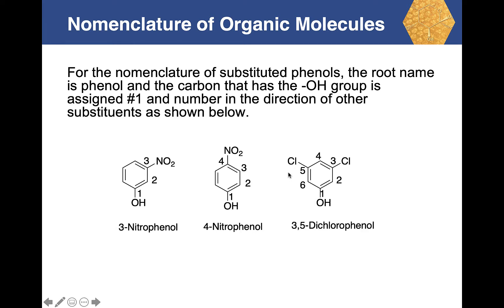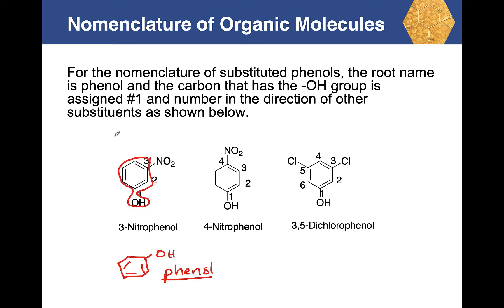Let's turn to phenols and review the nomenclature. Phenol is a benzene ring with an OH group — that is the phenol molecule. If you identify that portion in a molecule, it becomes the root for naming. For example, with the OH on carbon 1, if the nitro group is on carbon 3, the compound is 3-nitrophenol. If the nitro group is on carbon 4, it becomes 4-nitrophenol.